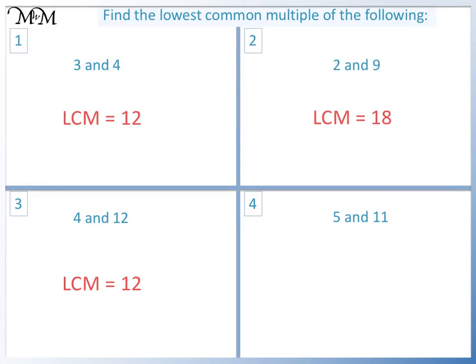No numbers divide into 5 that divide into 11. So we can multiply them together. The lowest common multiple is 55.